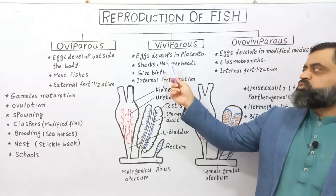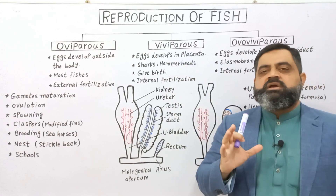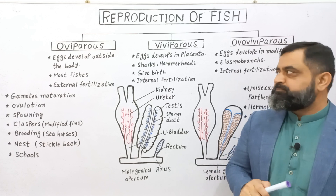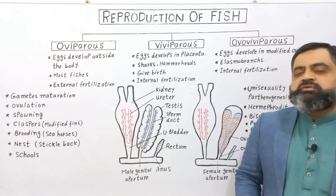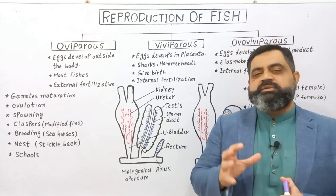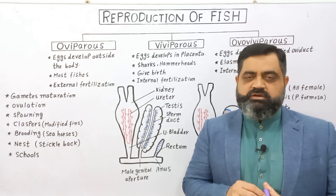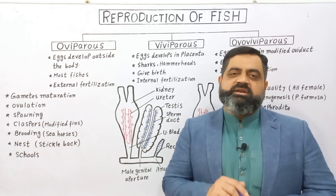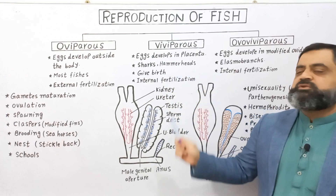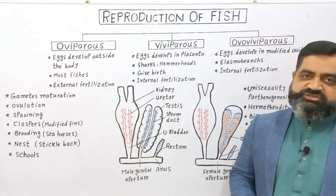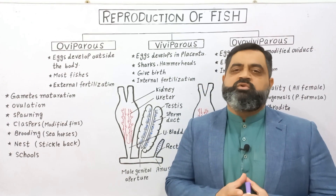Viviparous fishes develop eggs inside the body in a special organ known as the placenta. Examples of these fishes are sharks and hammerheads. Food is supplied to the developing embryos by the blood through the umbilical cord into the placenta. When development is completed, these fishes give birth to their young ones, and they usually perform internal fertilization.